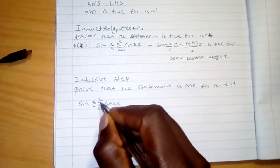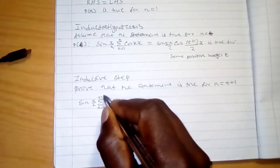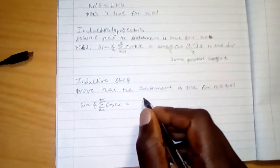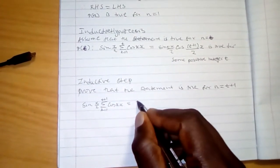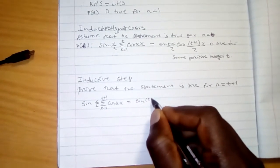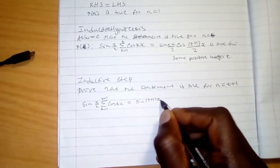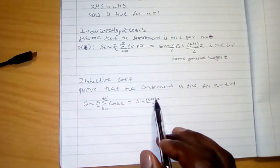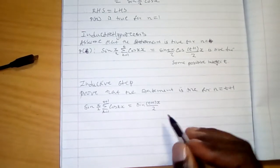Here we're going to add t plus 1, because n is equal to t plus 1, then is equal to sine of t plus 1 times x divided by 2. So when we add this t plus 1, where there is n, we add t plus 1.